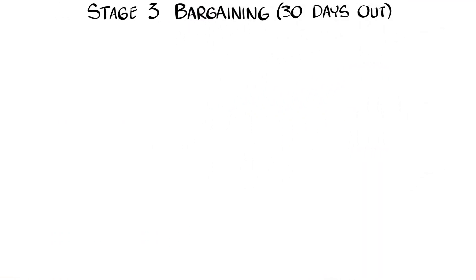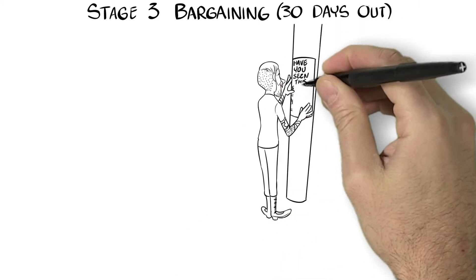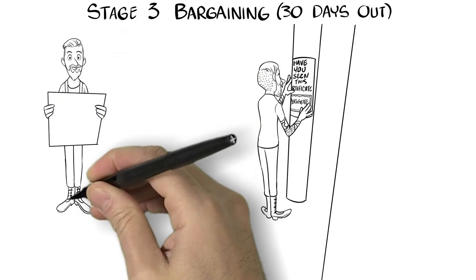Stage 3. Bargaining. When the third notice hits, Steve realizes he better find that certificate or nothing will get done. Someone has to know where it is, but no one will answer.